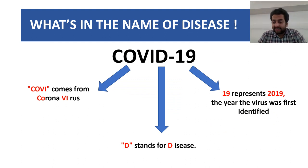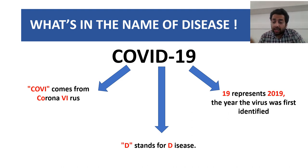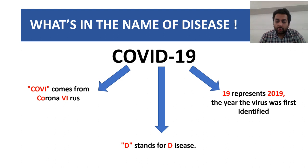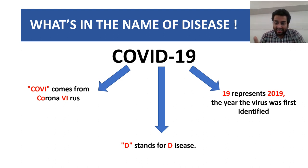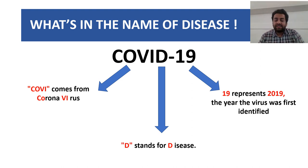What is in the name of the disease? The disease, as we all know, is known as COVID-19. The first four letters — C-O-V-I — come from the word coronavirus: C-O from corona and V-I from virus. The letter D comes from disease, and 19 represents 2019, the year when the virus was first isolated.